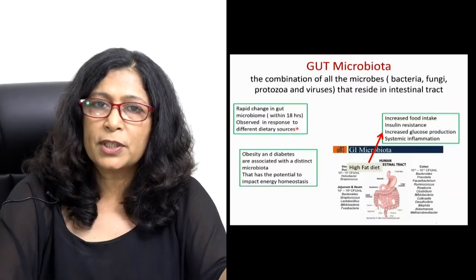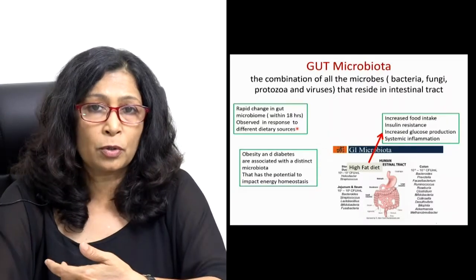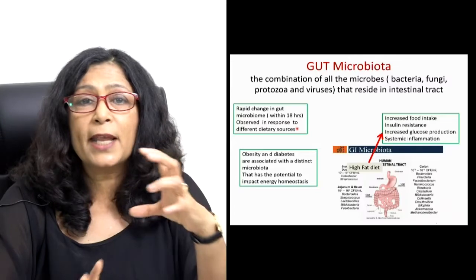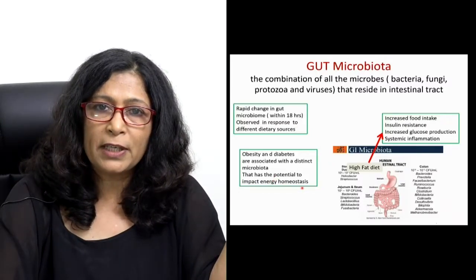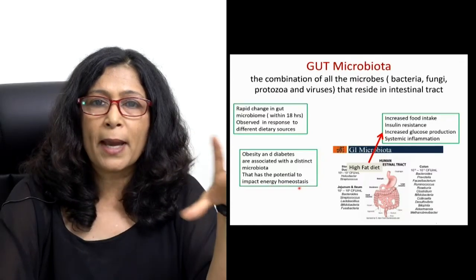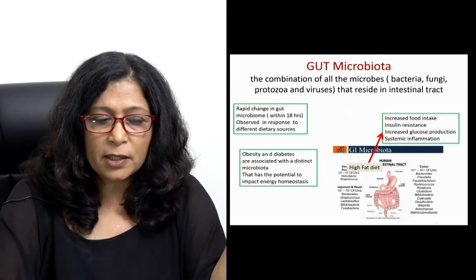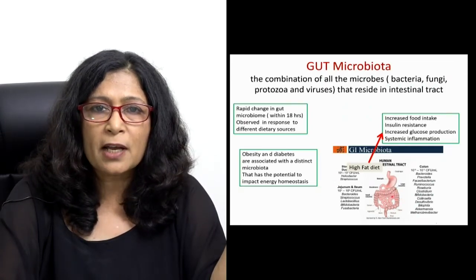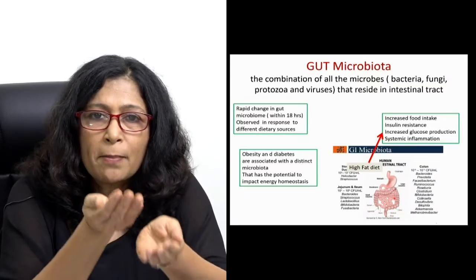As Ruchu was saying, the proportion can be changed. Obesity and diabetes are associated with distinct microbiota that have the potential to impact our energy homeostasis. A high-fat diet changes the microbiota, increasing the bad ones, so the proportion of bad microbiota goes up with high-fat diets.